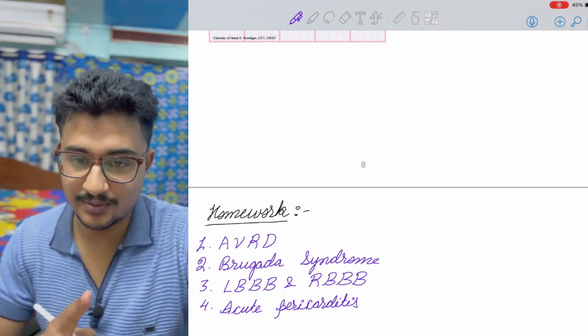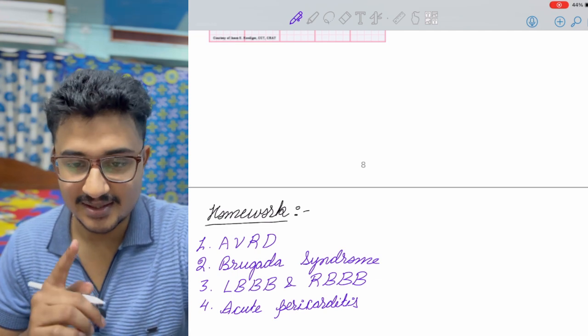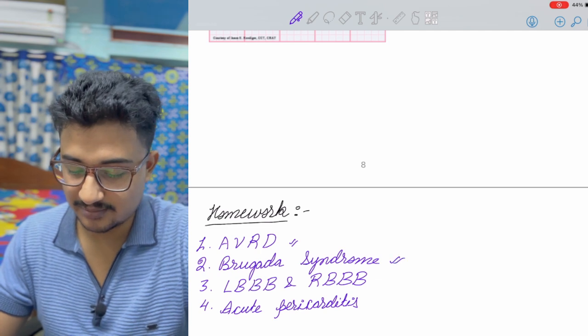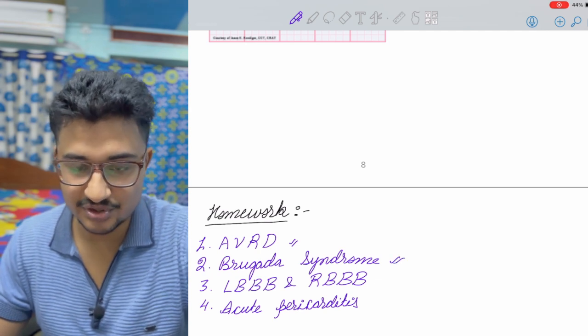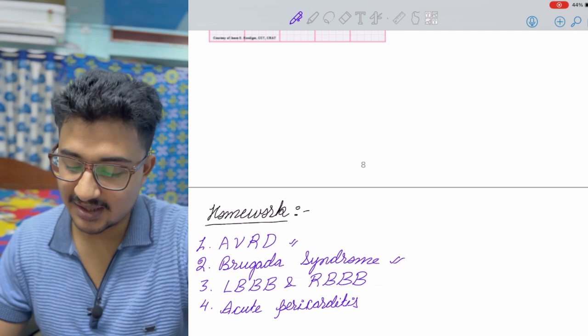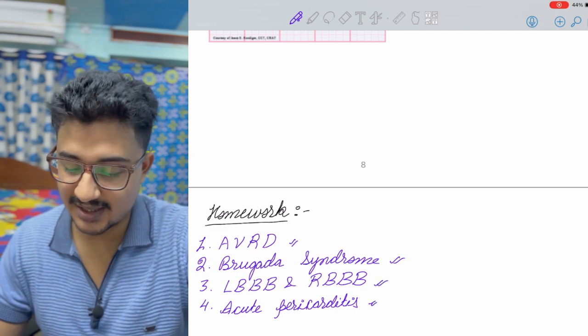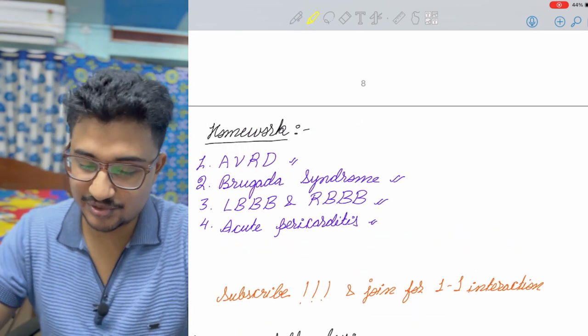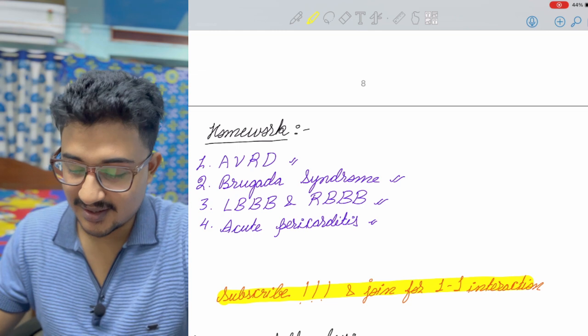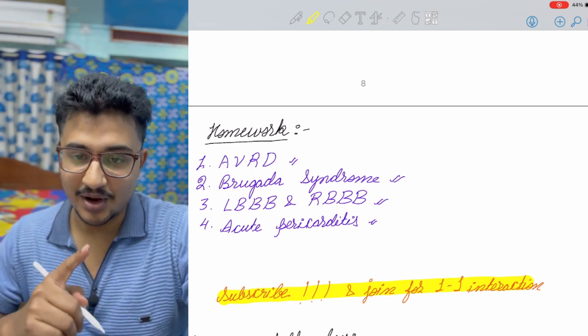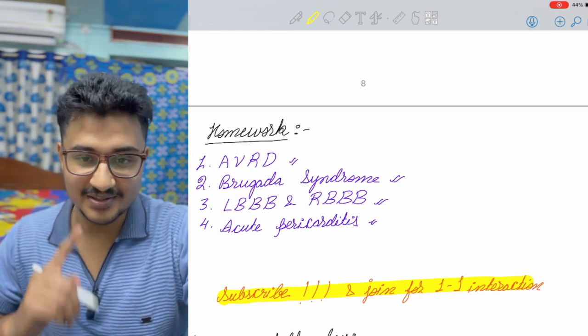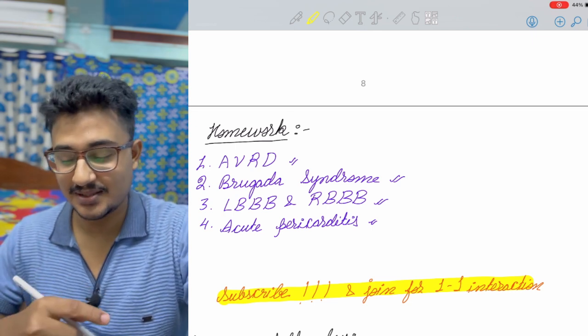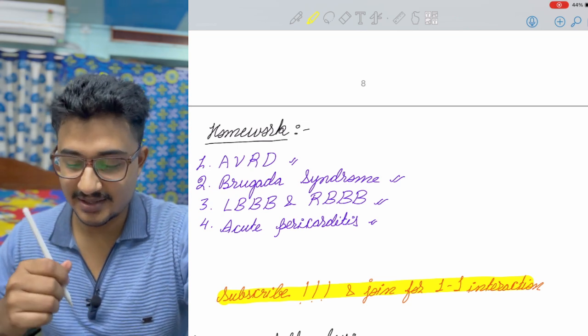Now I am giving you some homework, these have not been asked in previous year questions, but you should study them. RVHD ECG you should study. Brugada syndrome ECG you should study. Right bundle branch block and left bundle branch block, you have to see the ECGs and acute pericarditis. These four to do as homework. So everyone do subscribe to my channel. If you want to have one-to-one interaction with me, then you can join my YouTube channel. Then you can get access to the private telegram channel where you can ask me any question and I will try to reply.